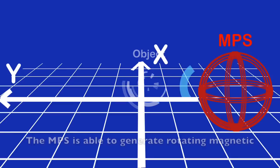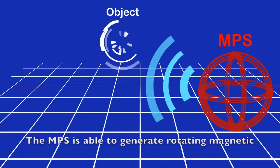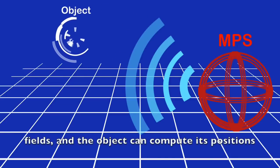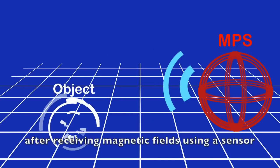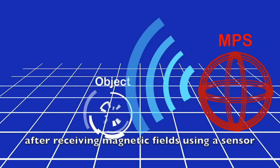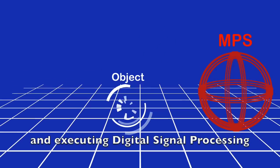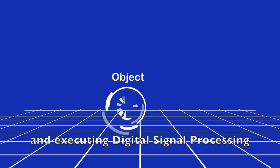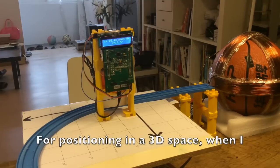The NPS is able to generate a rotating magnetic field, and the object can compute its position after receiving the magnetic field using a sensor and executing digital signal processing.